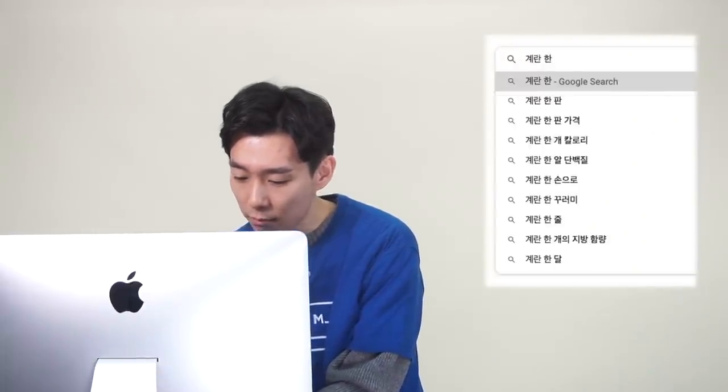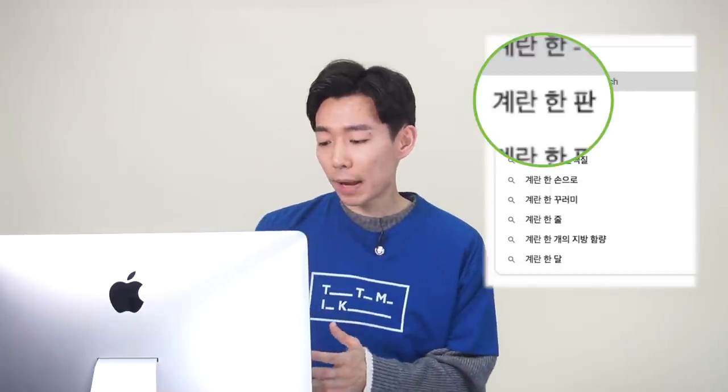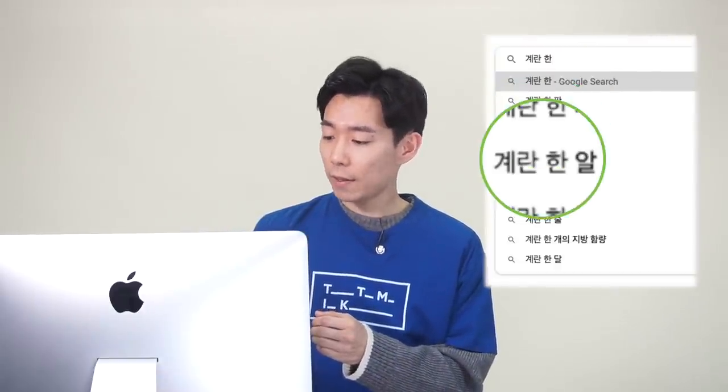For example, if you search for an egg — 계란 한 — you get 계란 한 판, 한 개, 한 알. See? Multiple different counters can apply to the same noun.